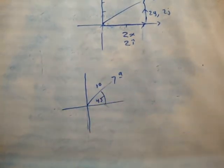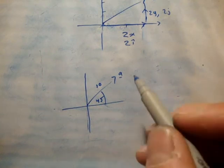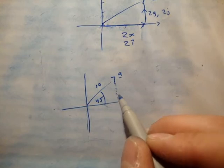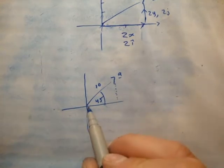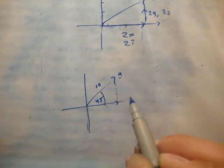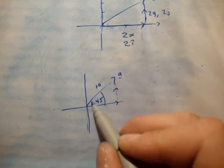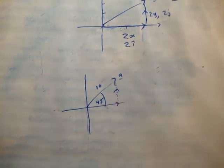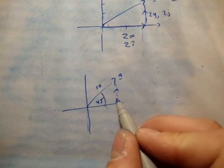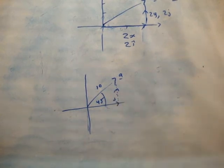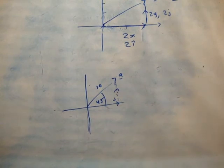First, you draw the component unit vectors by dropping perpendiculars — or equivalently, drawing the two vectors which when added together make your resultant. Either way you think about it, just remember that the angle between the components is 90 degrees, and you could think of it as dropping perpendiculars.